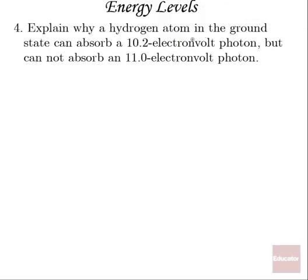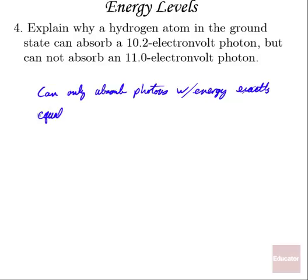Number four, explain why a hydrogen atom in the ground state can absorb a 10.2 electron volt photon but cannot absorb an 11 electron volt photon. Well, the key here is atoms can only absorb photons with energies that are exactly equal to the amount that will allow an electron to jump to a higher energy state. So 10.2 electron volts must be the difference between two energy levels that are allowed, where 11 electron volts does not bring you from one energy level completely to another energy level. So I would write something like, you can only absorb photons with energy exactly equal to the difference in allowed energy levels. Let's move on to number five.